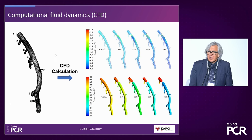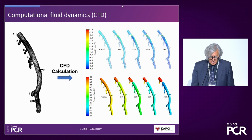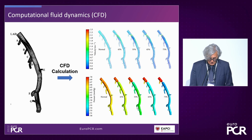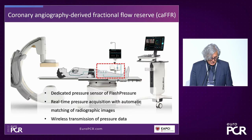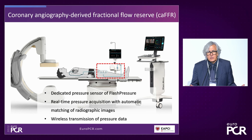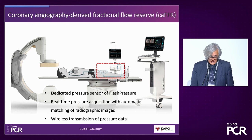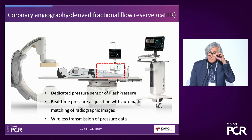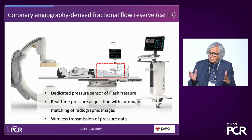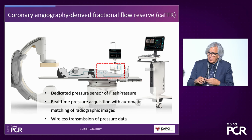CAFFR uses the Navier-Stokes equations - complex equations for the solution of fluid dynamics. This makes a difference compared with other systems such as QFR. CAFFR uses a solution based on computational fluid dynamics using finite elements to generate models of flow in the coronary arteries and the effect of coronary stenosis. Another characteristic is that for the calculation of boundary conditions, it uses the actual aortic pressure of the patient obtained from a pressure sensor installed in the cath lab, registering aortic pressure at the time the coronary angiograms are obtained.